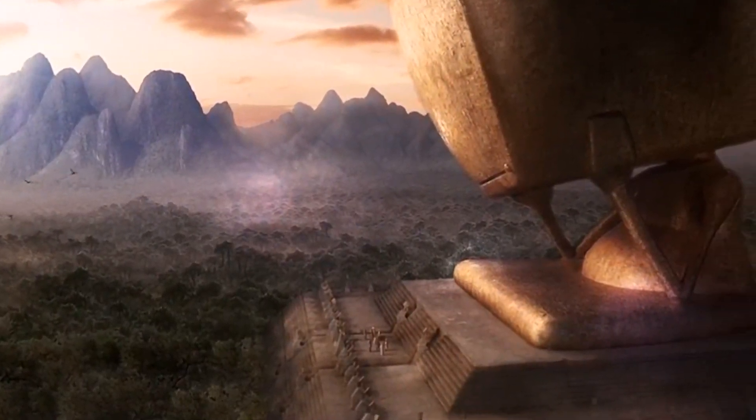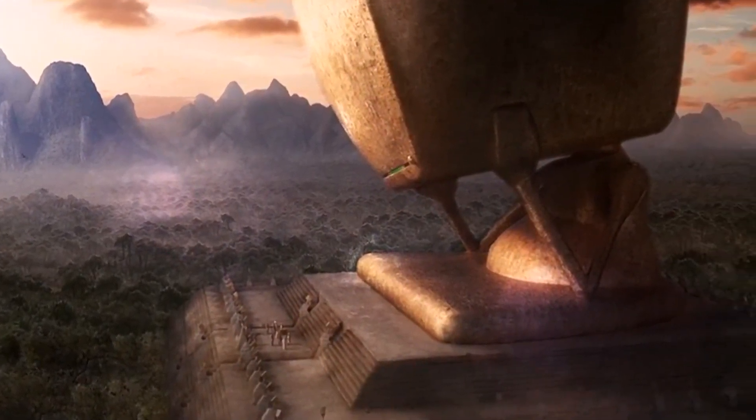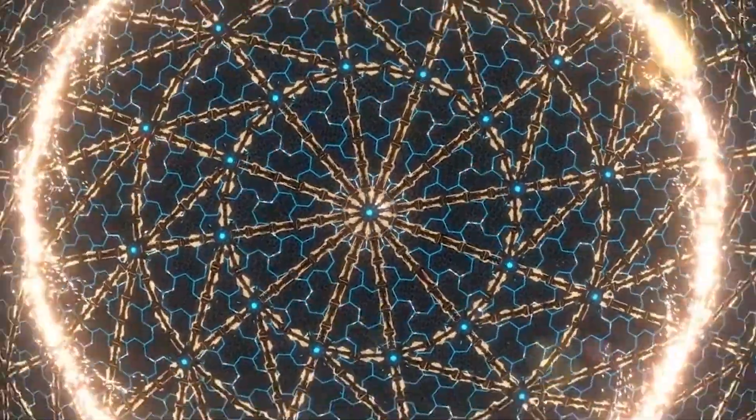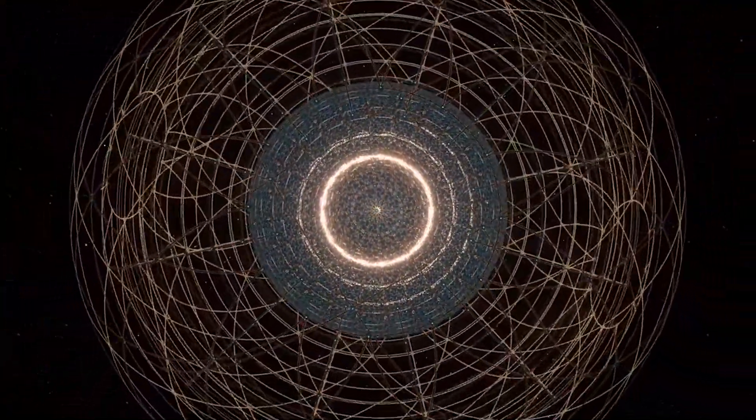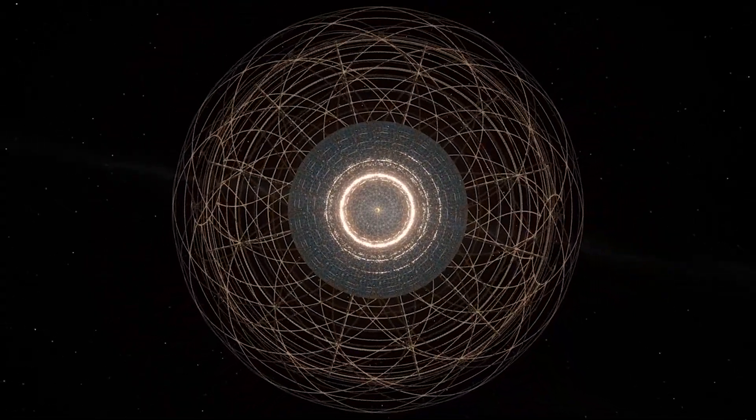Now, to work as a supergiant computer, or the highest capacity thought machine, a Matryoshka Brain would draw its power directly from the star, and spread it throughout the network of encompassing shells.